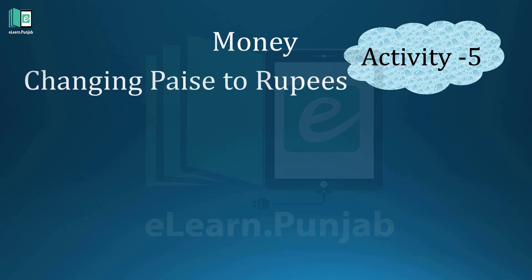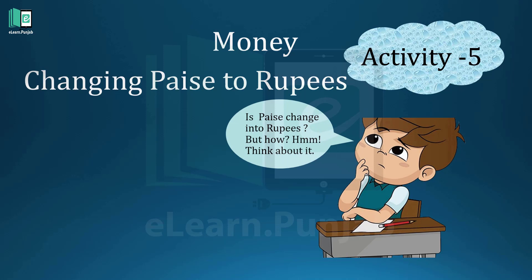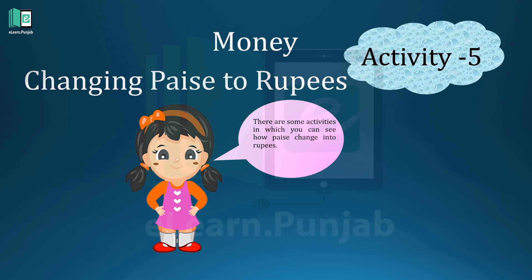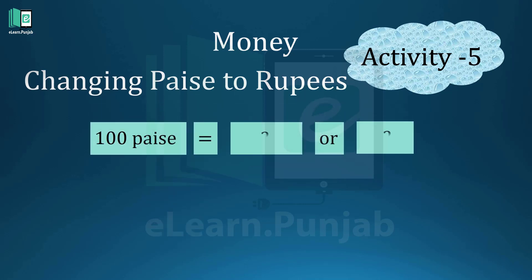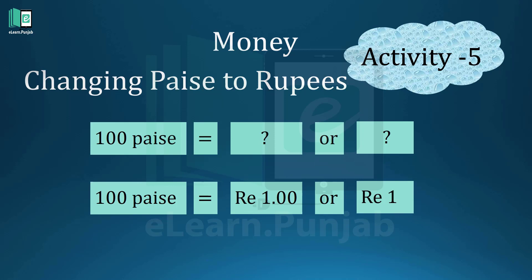Changing Paise to Rupees. How is Paise changed into rupees? Think about it. There are some activities in which you can see how Paise changes into rupees. So friends, here we go. 100 Paise is equal to how many rupees? 100 Paise is equal to Rupee 1, or we can write it as Re 1. By this method you can change Paise into rupees.